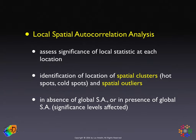In local spatial autocorrelation analysis, we need to construct a statistic for each location and then assess the significance of that statistic at each location. Once we've assessed the significance, we can use the significant local statistics to identify where the spatial clusters are. These are areas similar to their neighbors — either hot spots or cold spots — and spatial outliers, which are areas very dissimilar from their neighbors.